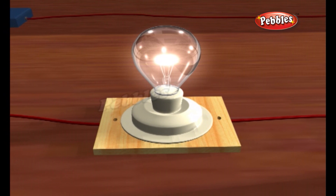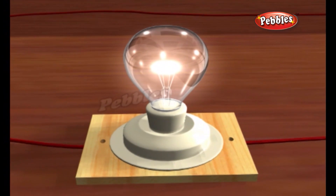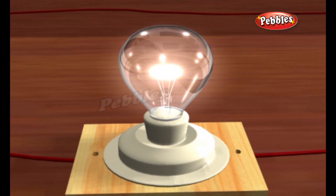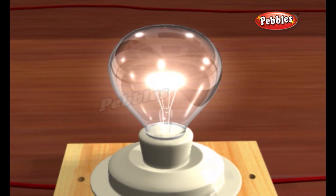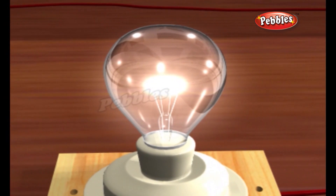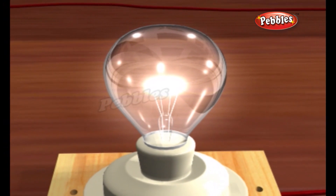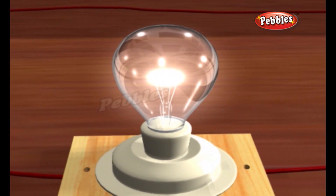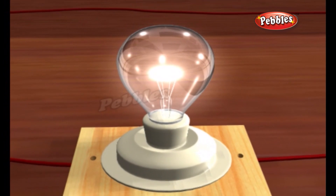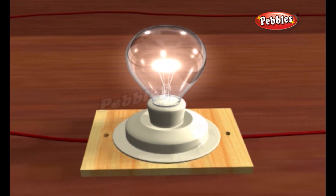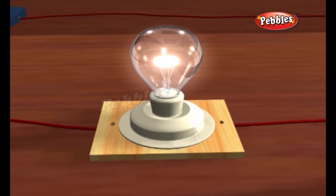Tungsten is used because it has a very high melting point. The tungsten is encased in a bulb for good reason — not only does it protect people and objects from the hot tungsten, it also keeps oxygen away from the hot metal, which would make it immediately burn up. The bulb is usually filled with a low-pressure inert gas such as argon.